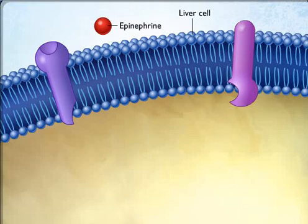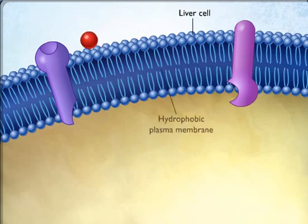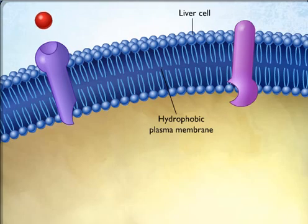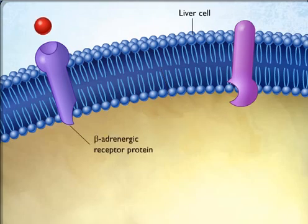Epinephrine is one of many hormones that is water-soluble, hydrophilic, and therefore unable to cross the hydrophobic plasma membranes of its target cells. Instead, it binds to receptor proteins located in the plasma membrane and does not enter the cell.